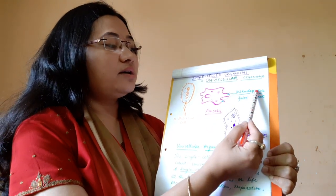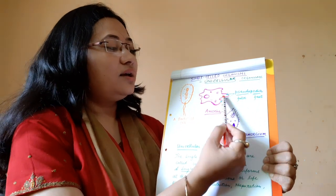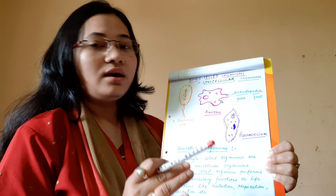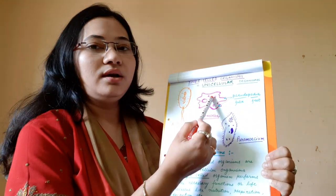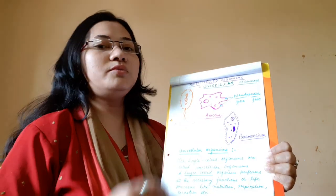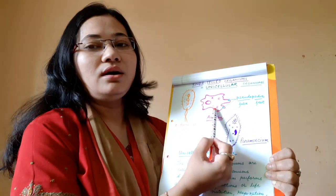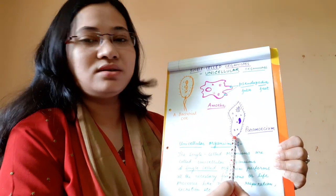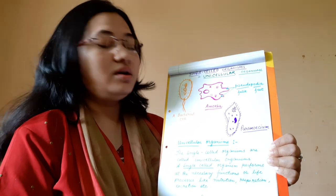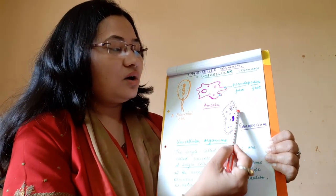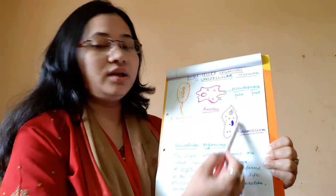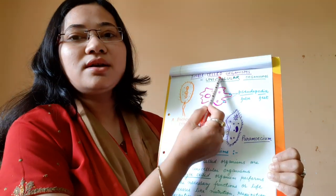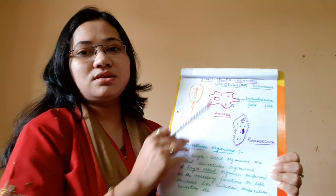Amoeba is a unicellular animal cell. It has a nucleus and a cell membrane. It also has pseudopodia — false feet — which help in capturing food by engulfing food particles and taking them inside, where enzymes digest and absorb them. Another unicellular organism is Paramecium, which is slipper-shaped and covered with cilia instead of pseudopodia.